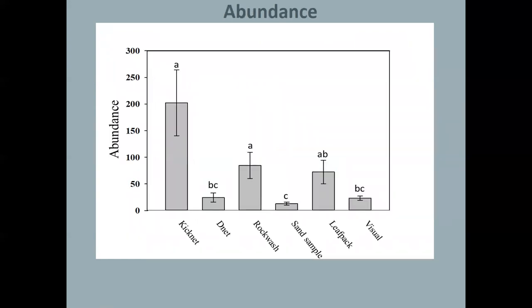Abundance, the total number of insects collected by that method. It is the highest for Kicknet, although Rockwash and Leaf Pack are statistically similar. But on average, about 200 collected with a Kicknet and less than 100 for Rockwash and Leaf Pack. And then visual and D-Net are trailing a little bit and sand sample with the lowest abundance.